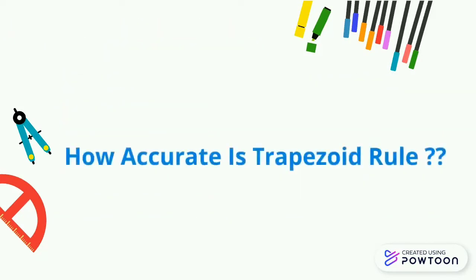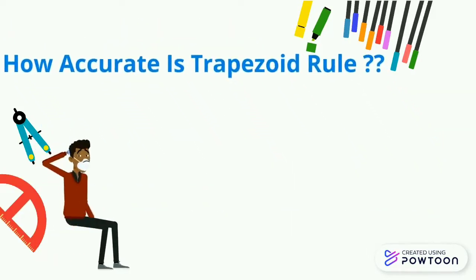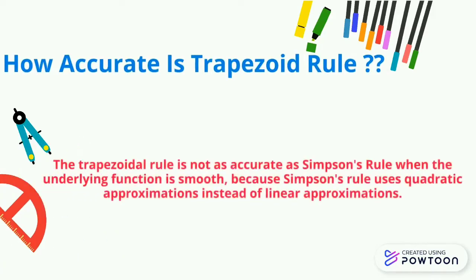How accurate is trapezoid rule? The trapezoidal rule is not as accurate as Simpson's rule when the underlying function is smooth, because Simpson's rule uses quadratic approximations instead of linear approximations.